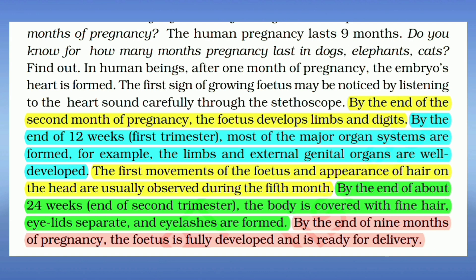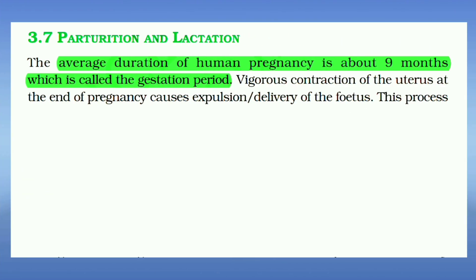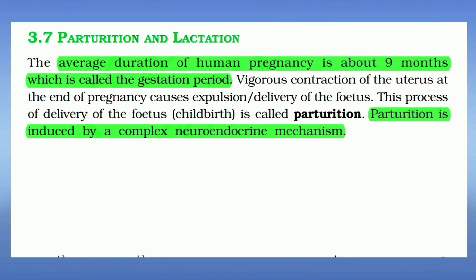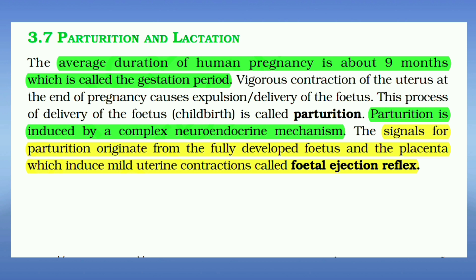By the end of nine months of pregnancy, the foetus is fully developed and is ready for delivery. The average duration of human pregnancy is about nine months, which is called the gestation period. Parturition is induced by a complex neuroendocrine mechanism. Signals for parturition originate from the fully developed foetus and the placenta, which induce mild uterine contractions called the foetal ejection reflex.